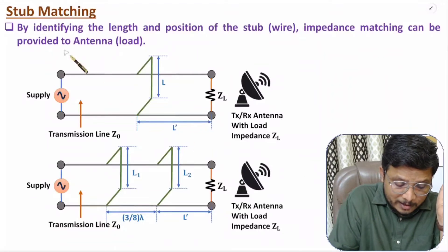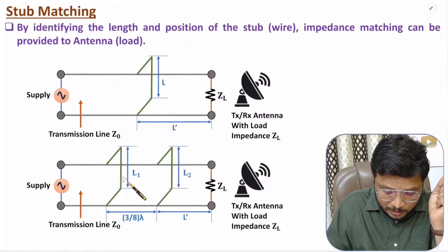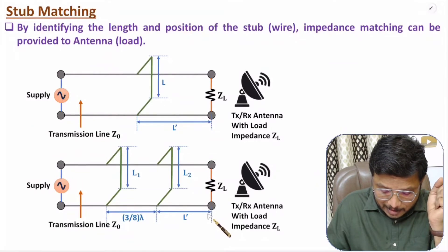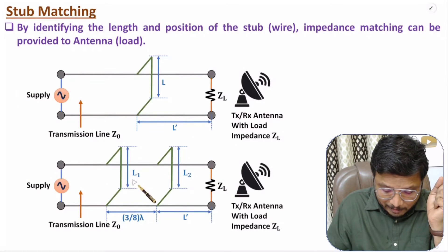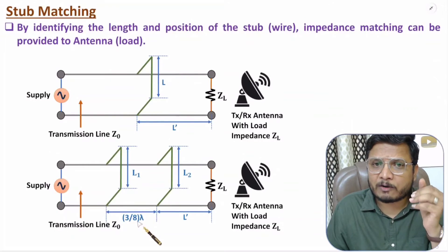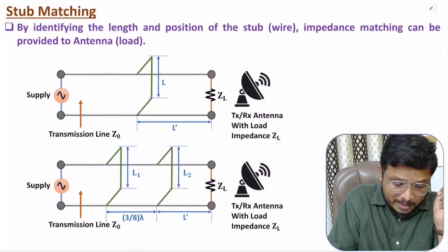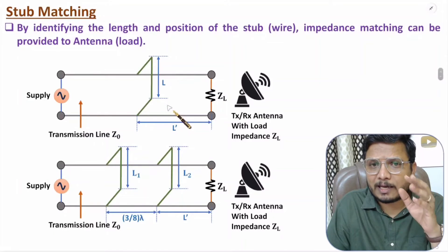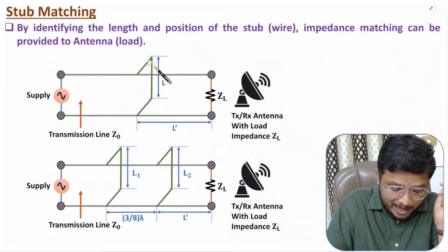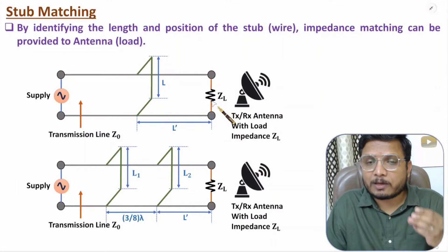There is another stub matching method using two wires — double stub matching — where we need to identify L1 and L2, the lengths of the two wires, and L-dash, the position of the second stub with respect to the antenna. The spacing between L1 and L2 is 3/8 lambda. I have solved problems on double stub matching in my microwave engineering video lecture series.